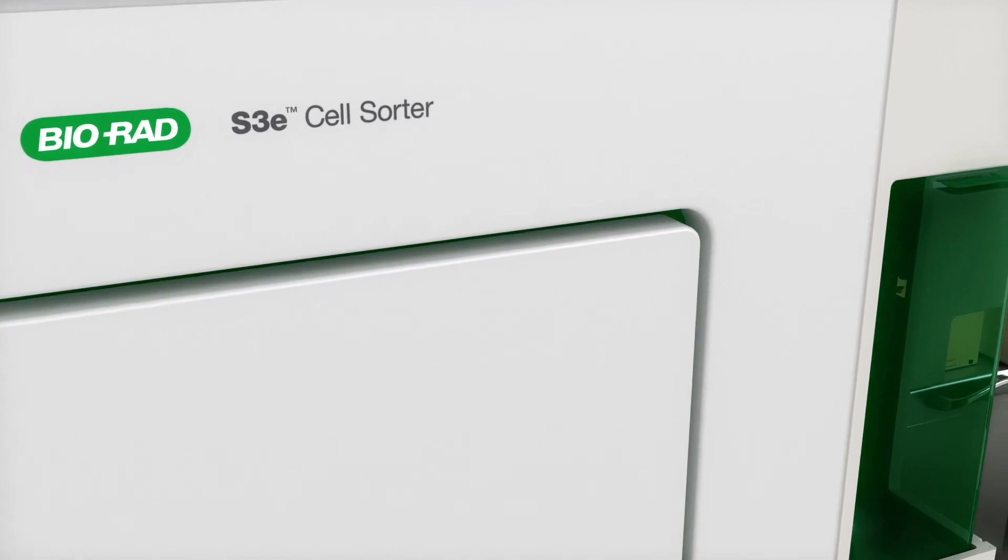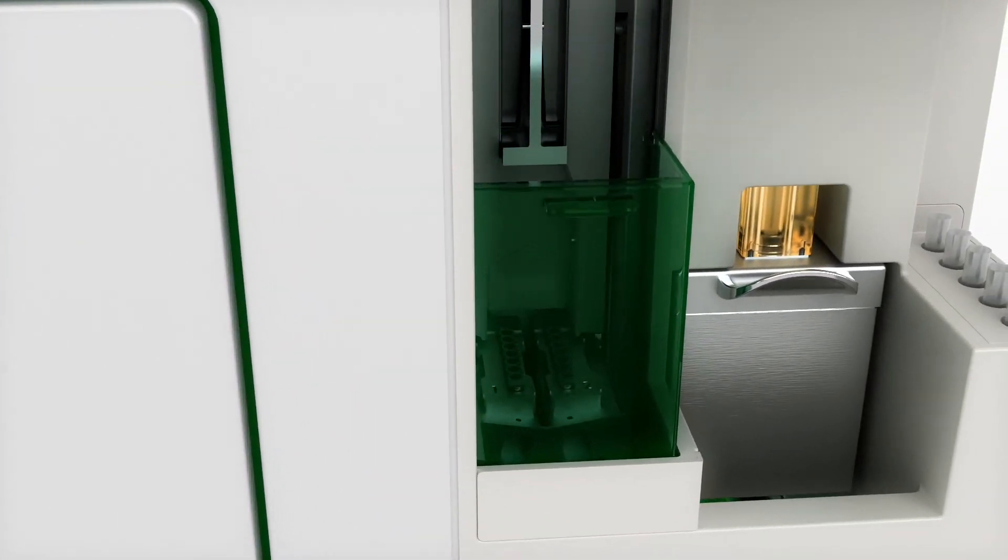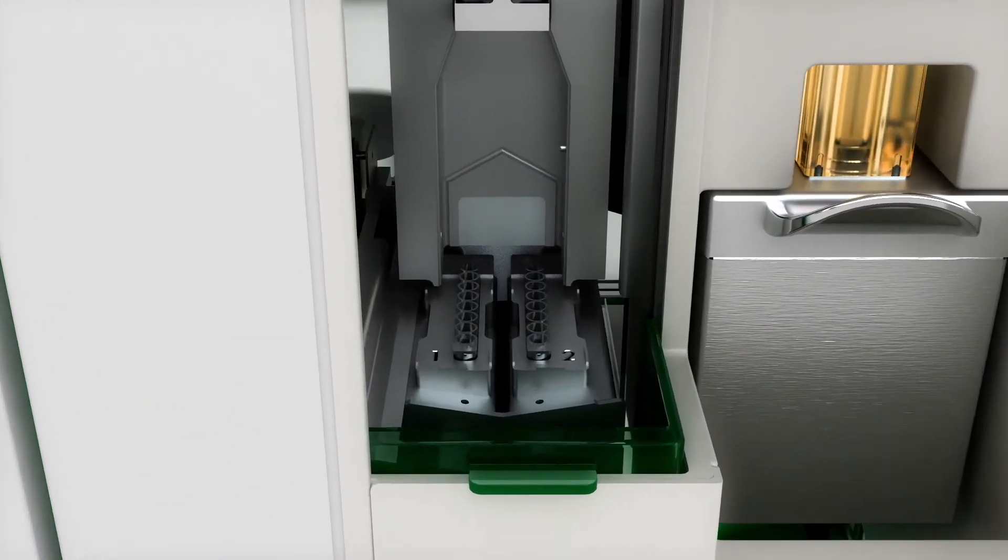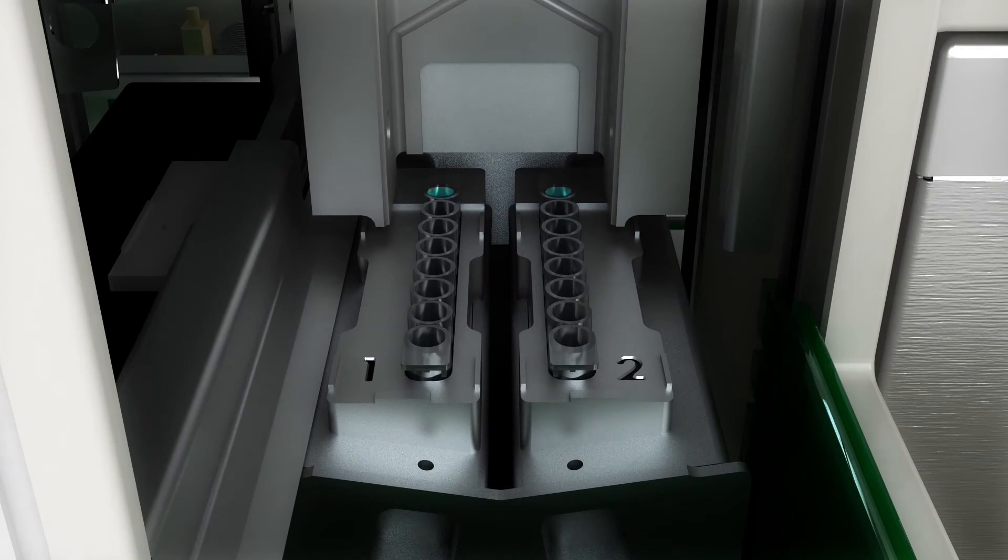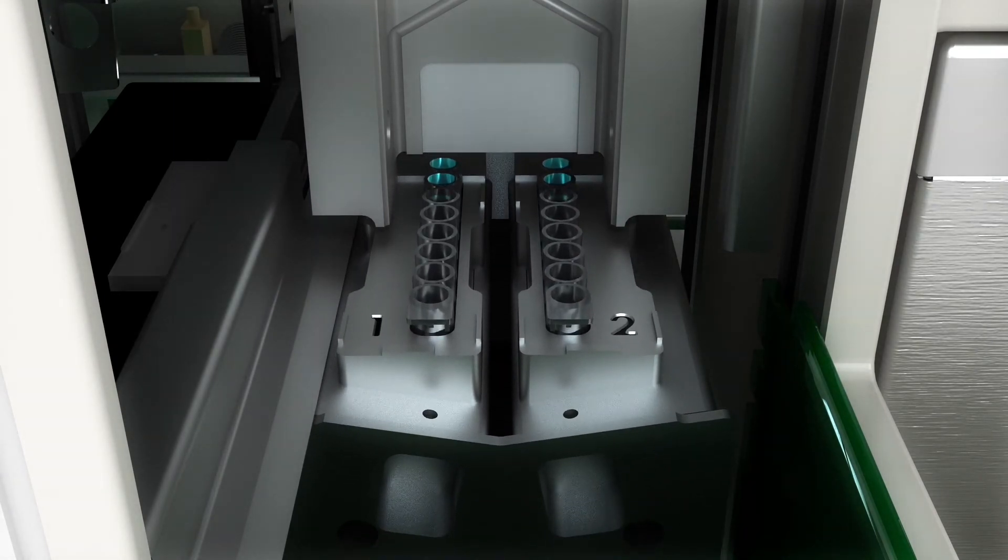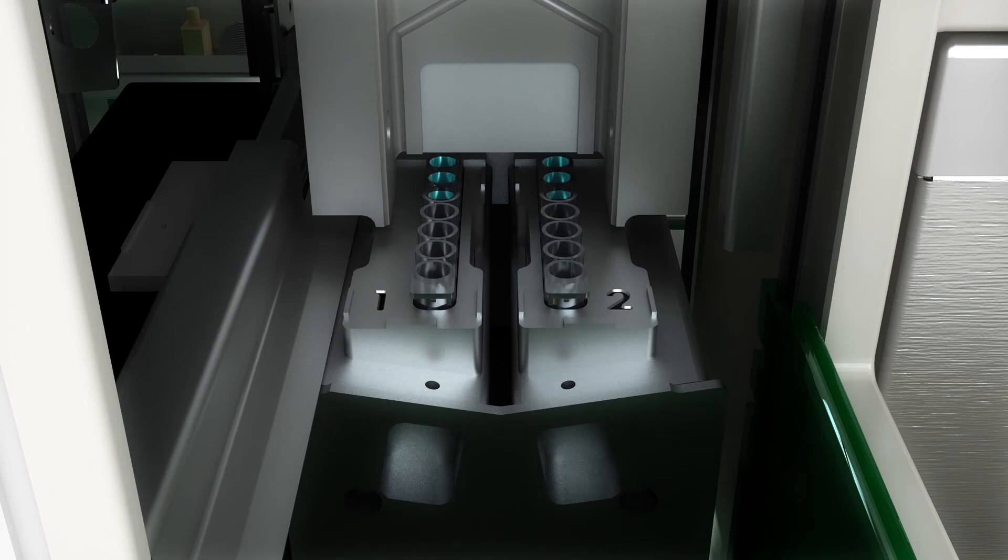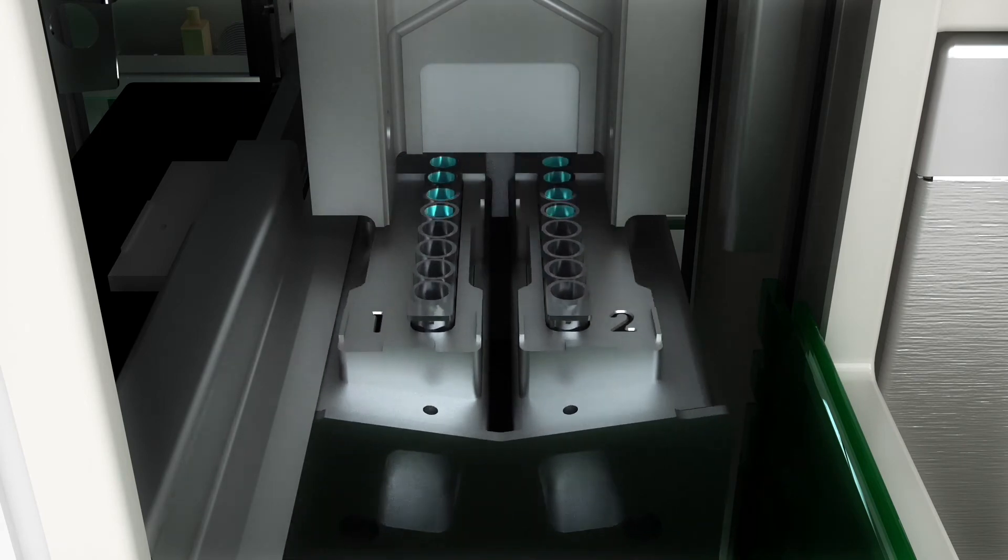The S3E is the only benchtop sorter that lets you set volume limits for collection vessels, so you never have to worry about losing your sorted cells due to overflow. The S3E automatically stops sorting or moves to the next tube position once the volume limit has been reached.